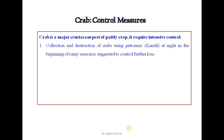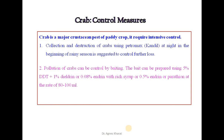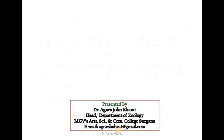How can we control crabs? Crab is a major crustacean pest of paddy crops and requires intensive control. Collection and destruction of crabs using petromax light at night in the beginning of the rainy season is suggested to control further loss. The crab population can be controlled by baiting. The bait can be prepared using 5% DDT plus 1% dieldrin, or 0.08% endrin with rice syrup, or 0.5% endrin or phorate at the rate of 80–100 ml. Crab burrows can also be fumigated with cyanogas to control the pest.